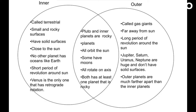In conclusion, the inner and outer planets in our solar system provide us with a wealth of information about the diversity of our solar system. Understanding the differences between these two categories of planets is crucial for gaining a deeper appreciation of our universe.